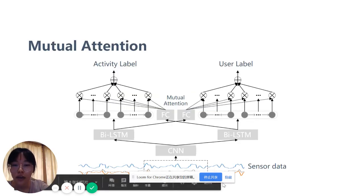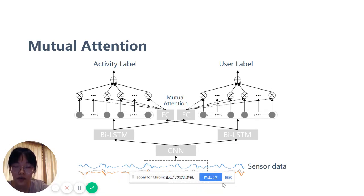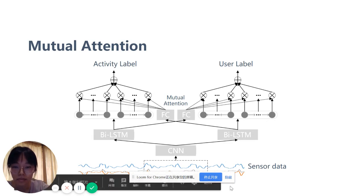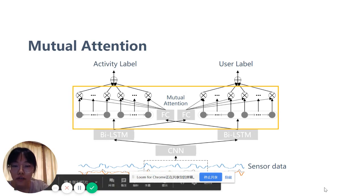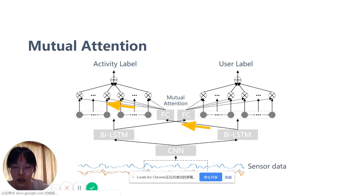Finally, we introduce mutual attention to deal with the task-specific feature vectors. Mutual attention helps exploit knowledge from one task to highlight important features of another. For activity recognition, it learns the mapping from user features to the weights of activity features, highlighting features suited to the current user.